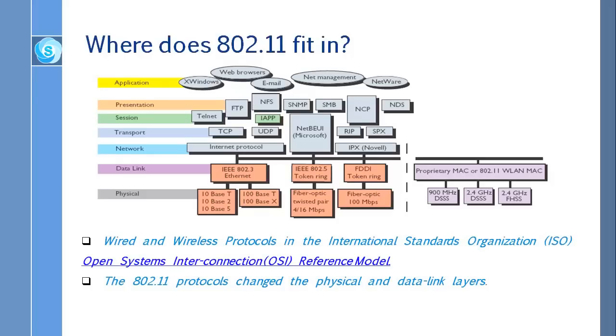If you look at the data link layer for the wired networks: 802.3 Ethernet, 802.5 token ring. These are all MAC protocols. And FDDI token ring. At the physical layer, Ethernet is using 10BASE-T, 10BASE-2, 10BASE-5 cables. These are the types of cables that we are using, or 100BASE-T or 100BASE-X.